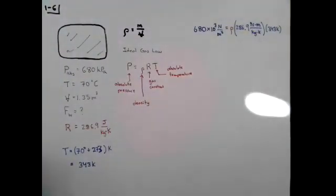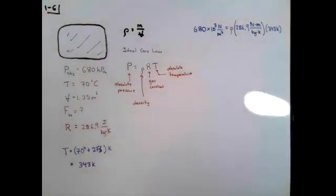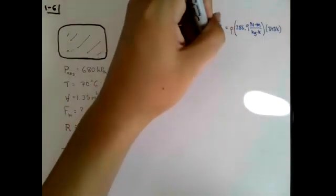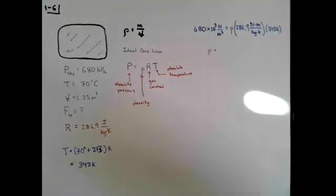Now look at what we have here. We have an equation where we know the pressure, we know the gas constant, we know the temperature. Can we solve for density? The answer is yes. So my density will be equal to my pressure divided by my gas constant divided by my temperature.